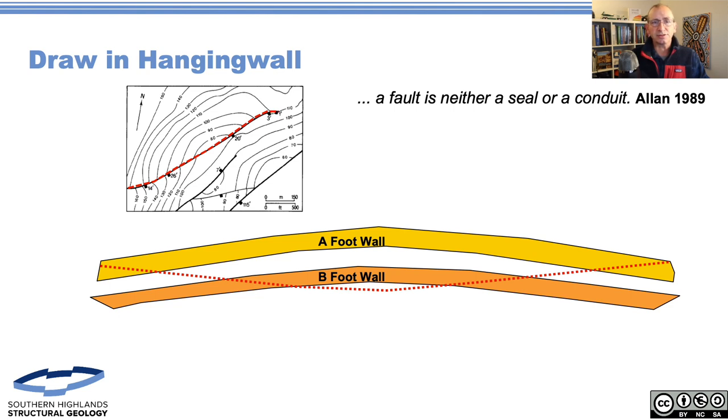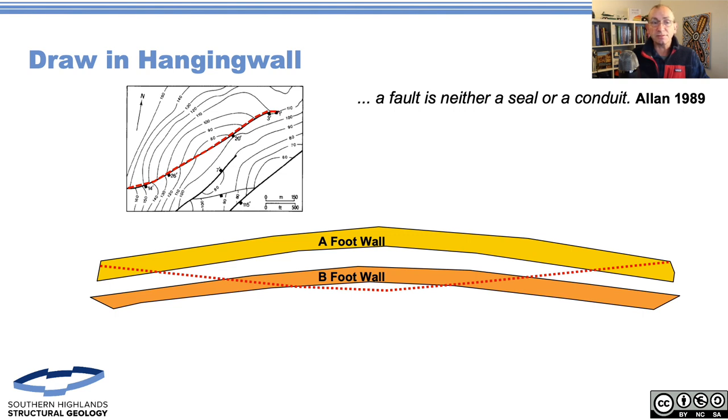Again we just trace the contours on the footwall side, on the hangwall side of the fault - the down-thrown side. This might seem a bit like trainspotting - we're counting contours - but this is a useful skill you can do on any map, provided it's posted and has a scale. That gives us our down-thrown side.